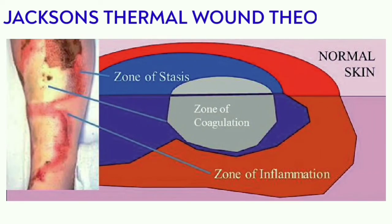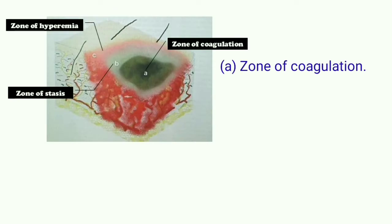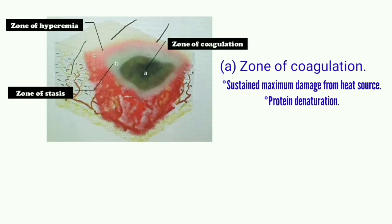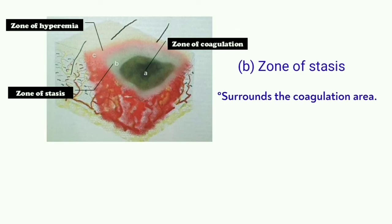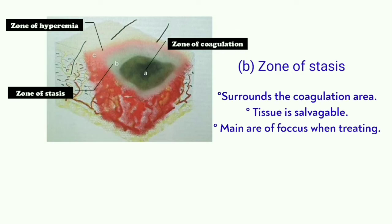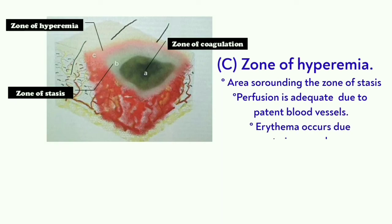Let's look at Jackson's thermal wound theory. According to this theory, there are three zones of major burn injury. The zone of coagulation is the area that sustained maximum damage from the heat source — proteins become denatured, and cell death is imminent due to destruction of blood vessels, resulting in ischemia. This injury is irreversible and can lead to coagulative necrosis and gangrene. The zone of stasis surrounds the coagulation area, where tissue is potentially salvageable — this is the main area of focus when treating burn injuries. Lastly, the zone of hyperemia is the area surrounding the zone of stasis, where perfusion is adequate due to patent blood vessels, and erythema occurs due to increased vascular permeability.